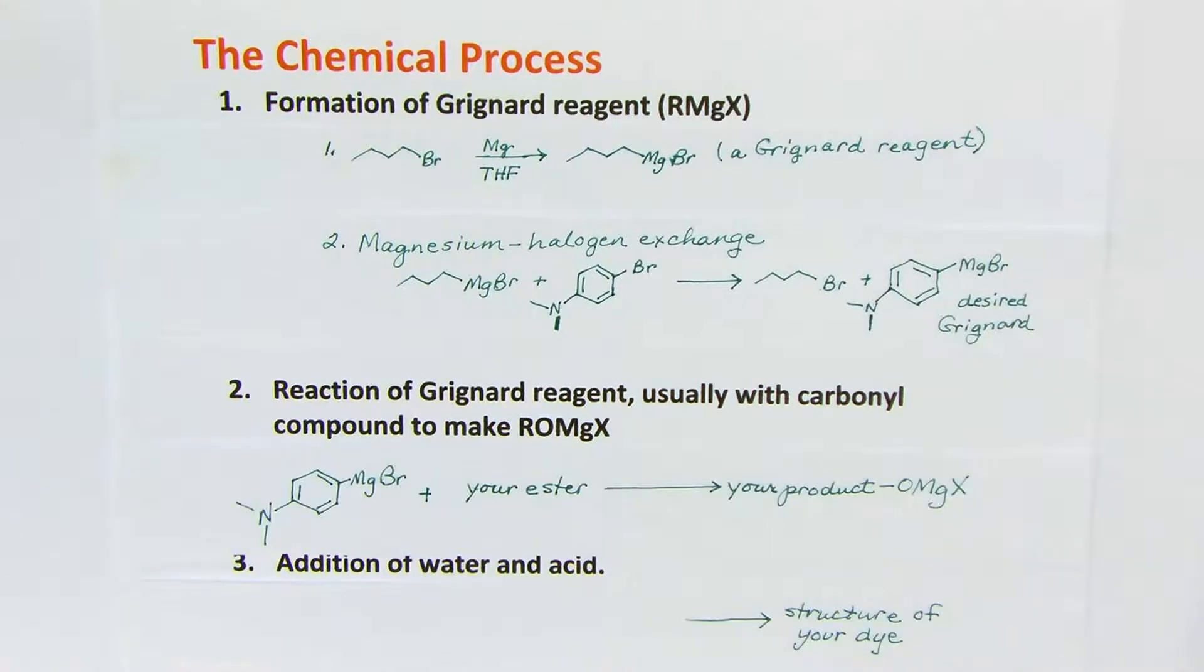Once we have the Grignard reagent we want, we then react it with the ester for your particular synthesis. Your product will end up with an OMgX functional group. Don't forget to balance this equation.